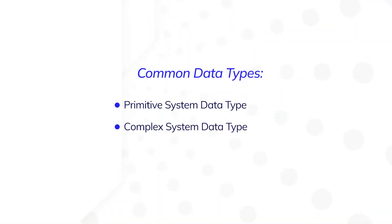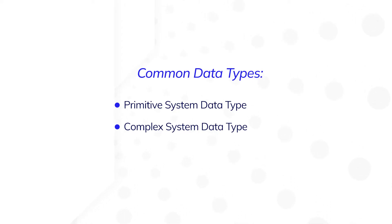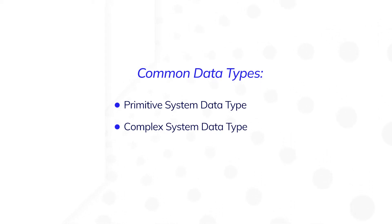The two main kinds of data types are primitive and complex data types. Primitive data types represent kinds of data such as text, numbers, or times. Fields and records are each defined as a primitive data type.